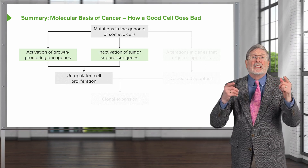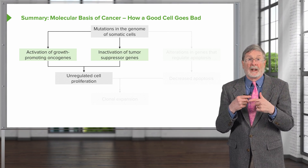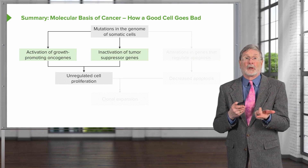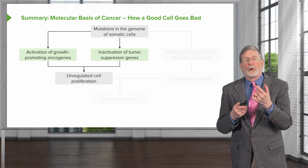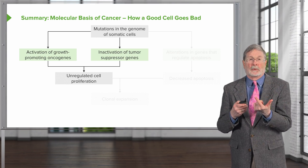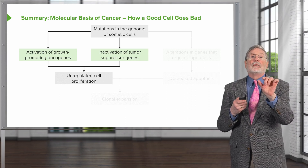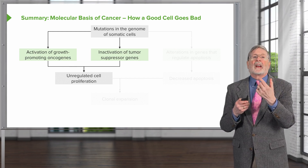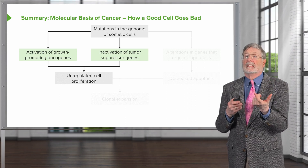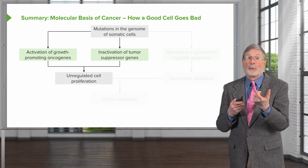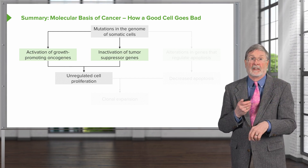If either or both of those happen, then we'll get unregulated cellular proliferation. That's only part of the story — it just means the cells are growing. In fact, that could be those colonic polyps that are benign. It's still not malignant, but we're on our way — now we have unregulated cell proliferation.